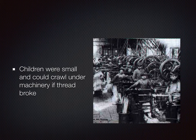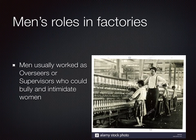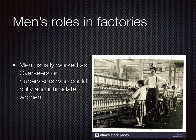Children were also small and could crawl under machinery if thread broke, which was a very dangerous job — many children were killed or lost their limbs. The majority of men who worked in these factories were supervisors or overseers, in a role to bully or intimidate the women and children working there. As shown in this photo, a man towering over a young child would have been a very intimidating situation for the people working in the factory.